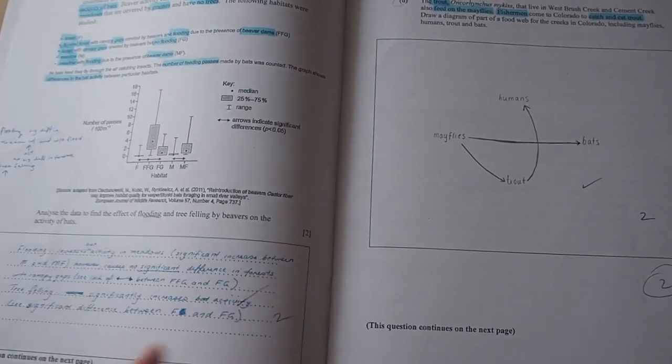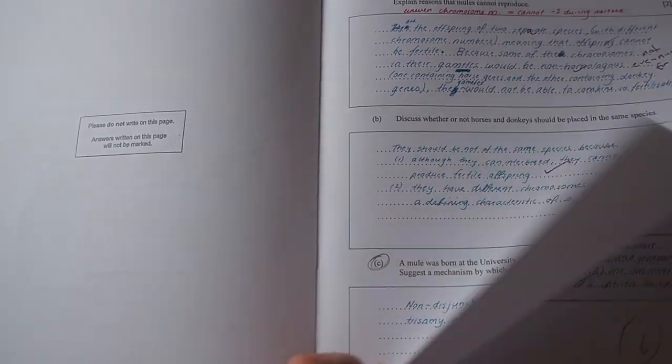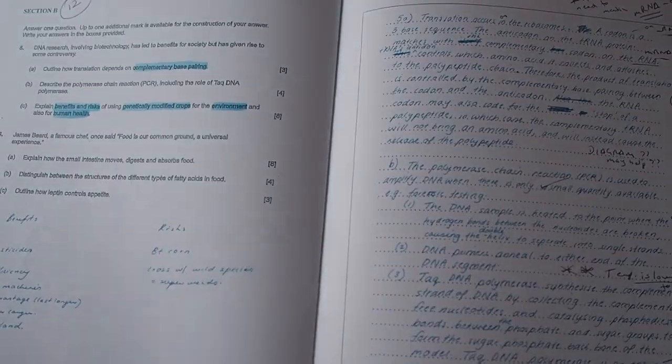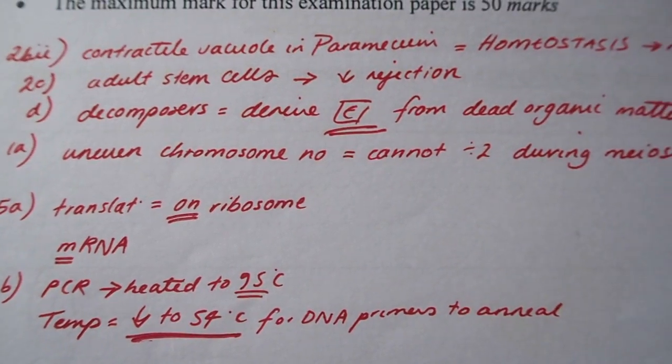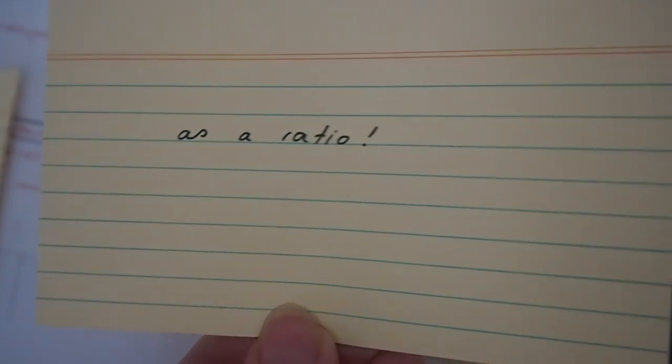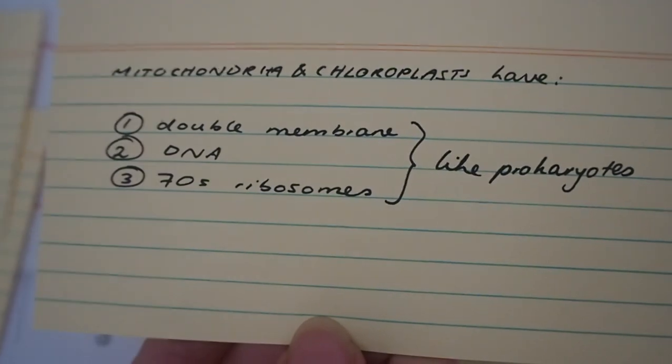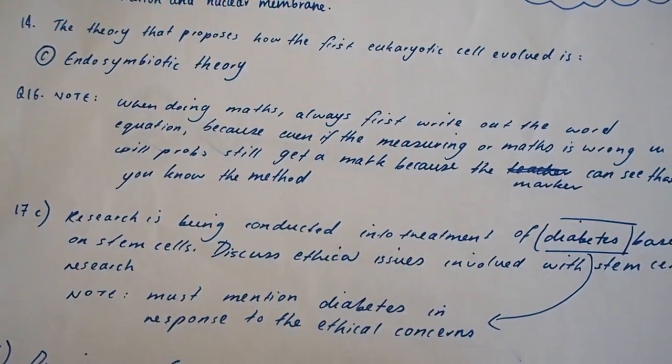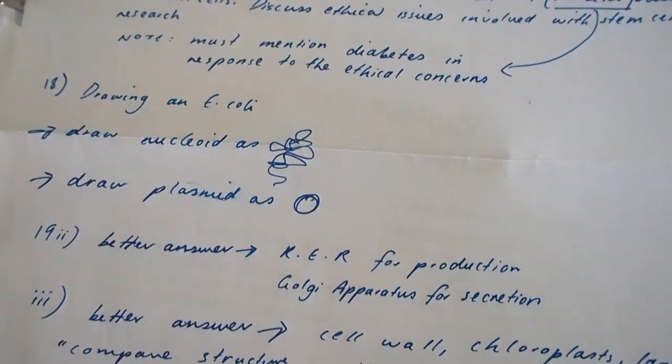Similar to what I talked about in my video about IB maths, I think it's really important to take the time to go through and understand the mistakes that you make in practice assessments. Throughout the entire two years, and when doing practice papers before my final exams, I would write all of my mistakes on the front page of the paper. Sometimes I would also make flashcards based on these mistakes. I stored all of these practice assessments and corrections alongside my other notes in the large folder, so when preparing for final exams I could quickly review all of my most common mistakes and the areas I found most challenging.